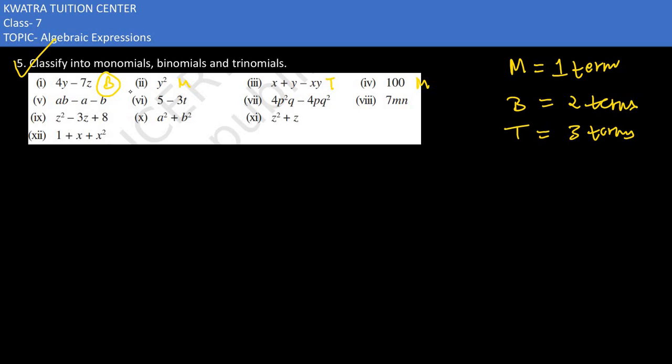In the fifth case, you can see there are three terms in total, so that would be a trinomial. In the sixth one, you would have two terms. And what do two terms mean? It's a binomial.